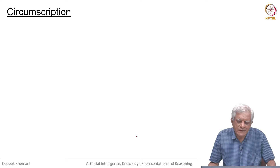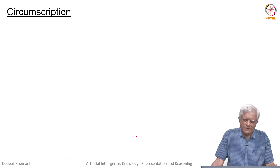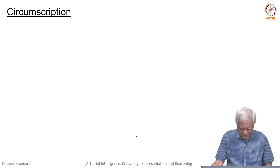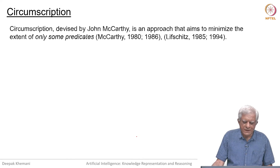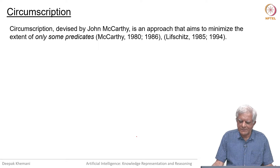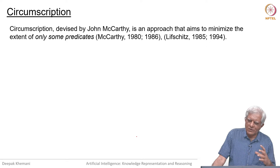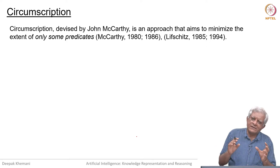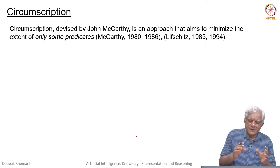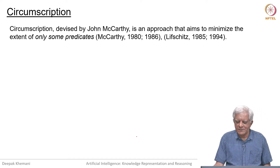Welcome back. We have looked at the closed world assumption, and now let us look at a more powerful mechanism called circumscription. It was devised by John McCarthy and is an approach that aims to minimize the extent of only some predicates. The closed world assumption minimized all predicates, the generalized closed world assumption was a little bit more liberal, but circumscription says that you tell us which predicates you want to minimize.